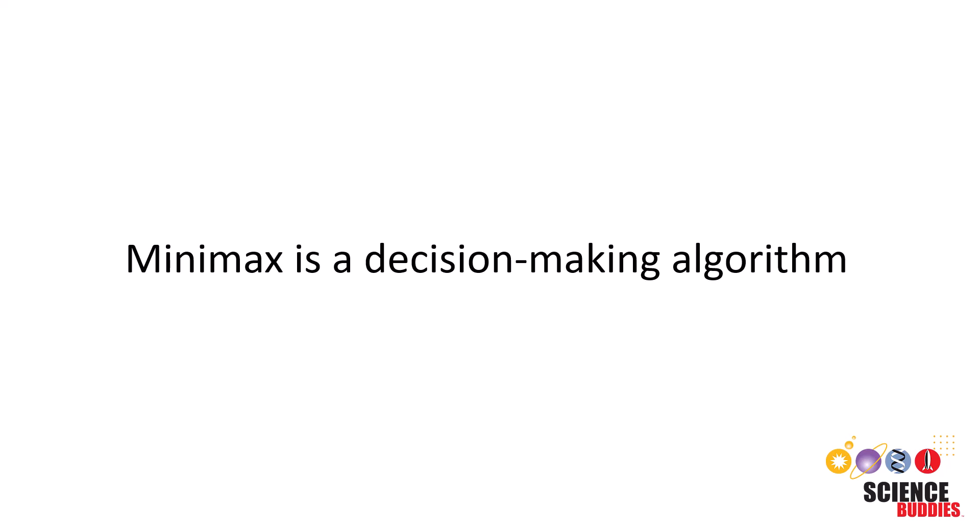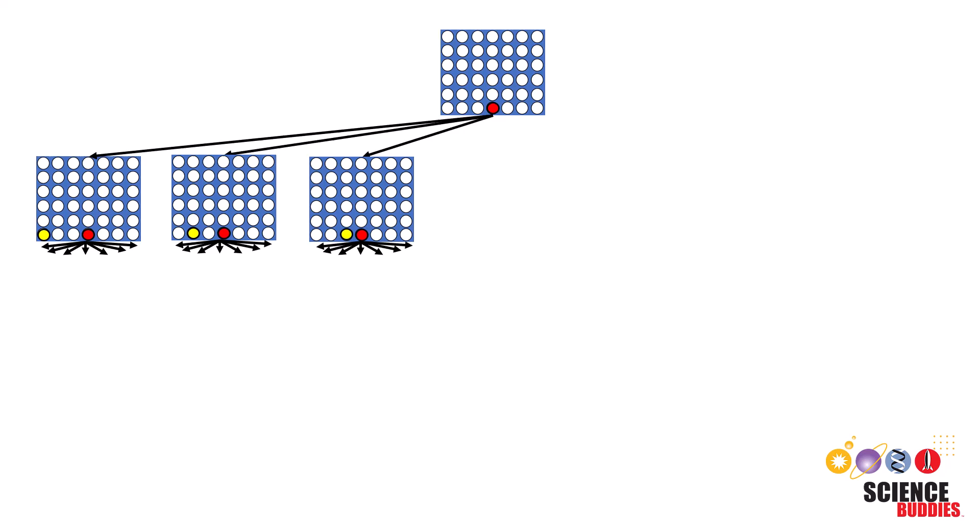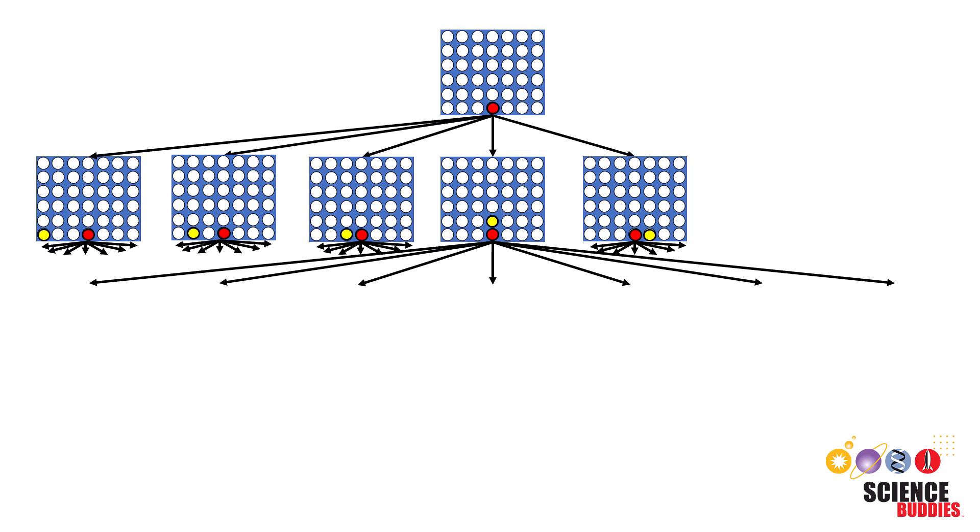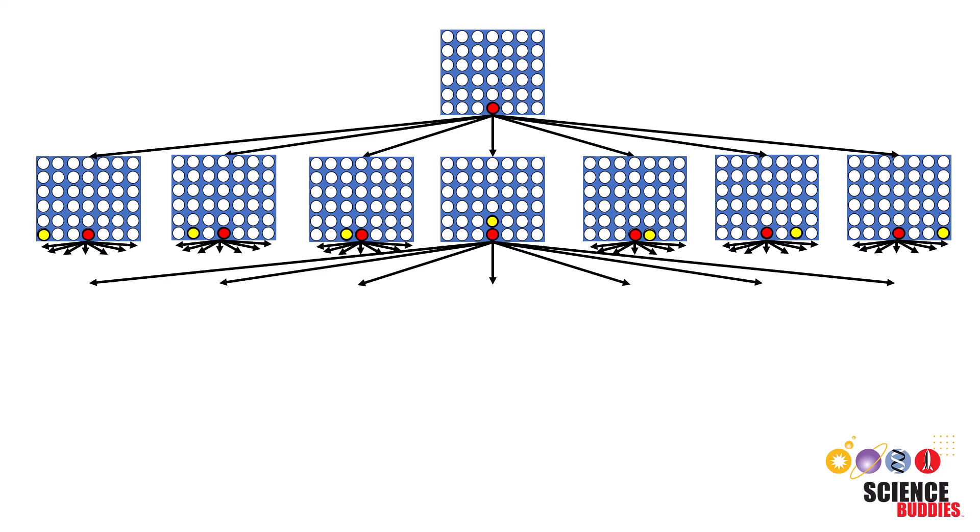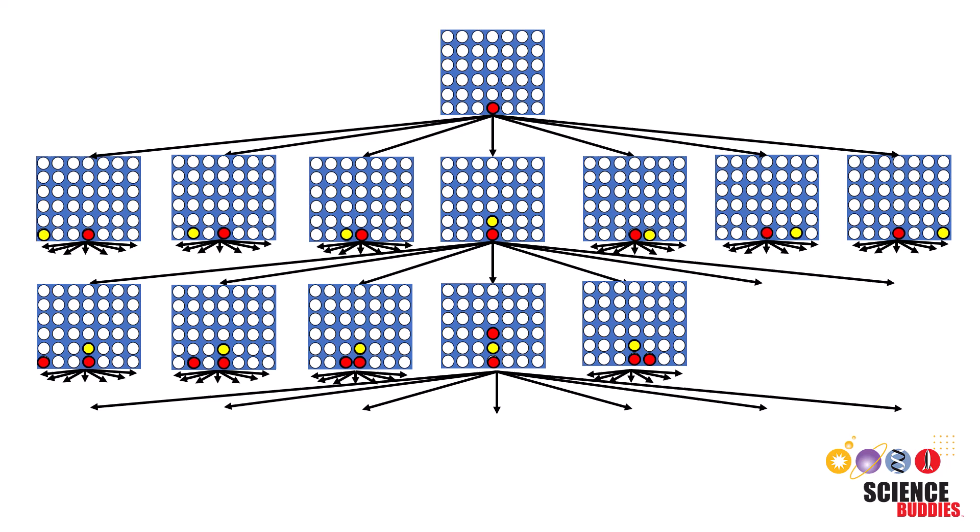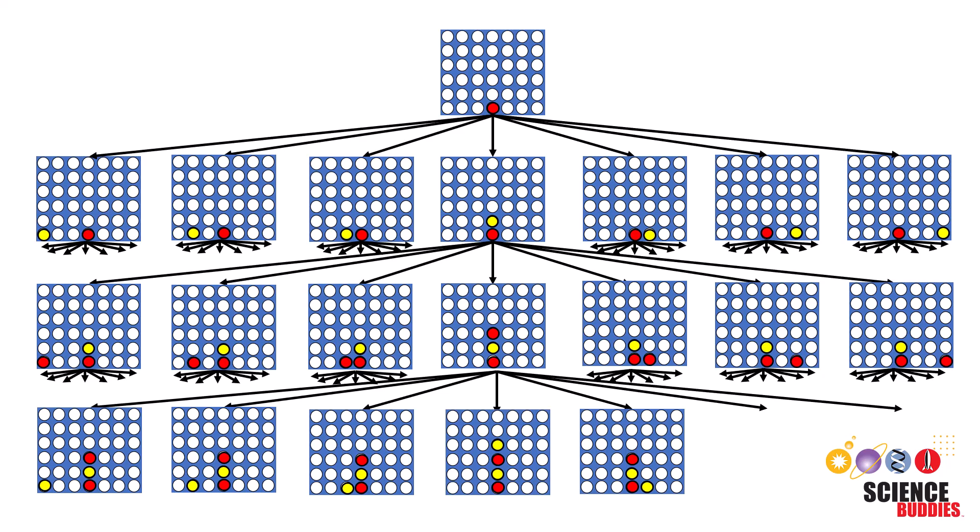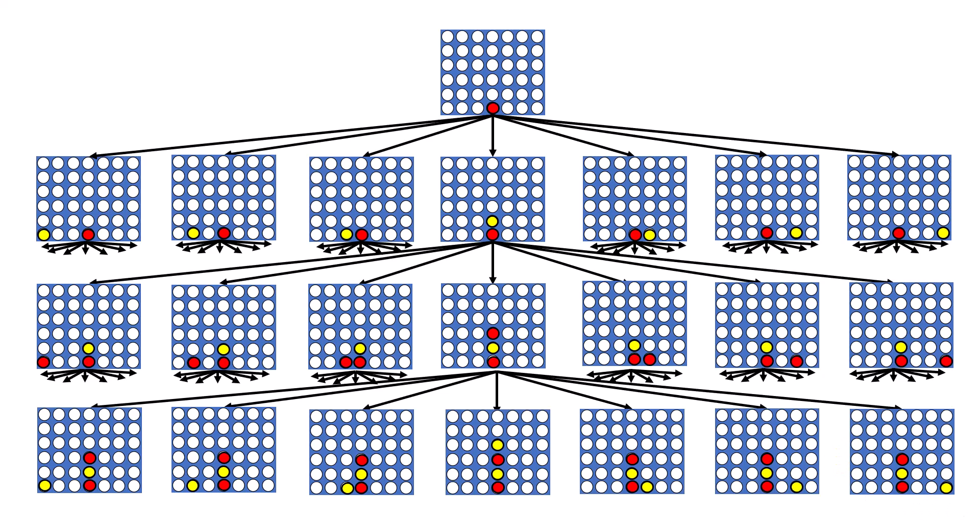Minimax is a decision-making algorithm, commonly used in two-player turn-based games, including Connect 4. The goal of the algorithm is to determine the best move for a player by considering all possible moves and their outcomes. It operates on the principle of minimizing potential loss for the worst-case scenario, while maximizing the potential gain for the current player. Minimax involves recursively evaluating game states, creating a tree of possible moves and outcomes, and selecting the move that leads to the best overall result. To learn more about the Minimax algorithm, check out our other video in the description.